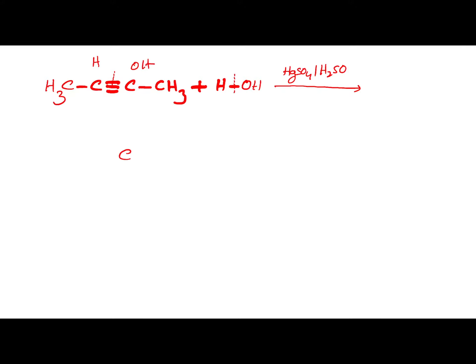So we can get CH3-CH2, sorry, CH double bond C-OH-CH3. This is enol form. Enol form, we know, is very unstable.